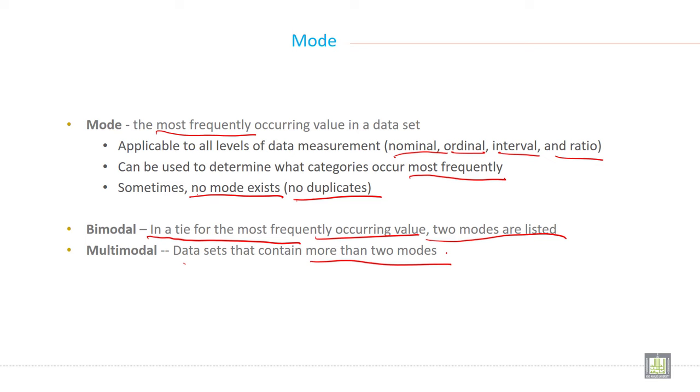So in case of mode, when you have data set, it may be possible that there will be one mode. It may be possible that there will be no mode, if no repetition. It may be possible the data is bimodal, if there is two repetitions. And it may be possible the data is multimodal, if there is three repetitions.